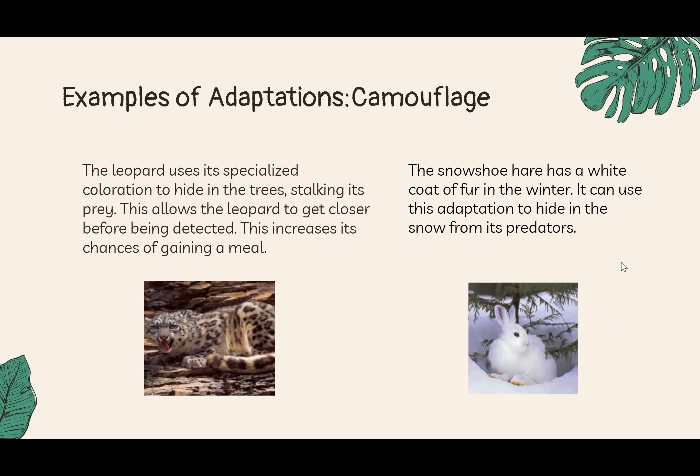Now let's look at some examples of adaptation. The first is camouflage. On the left, a leopard uses special coloration to hide in trees and ambush prey, increasing its chance of getting a meal. On the right, the snowshoe hare has a white coat of fur in winter, used to hide from predators in the snow. This is the opposite purpose from the leopard, showing that camouflage can serve different functions.